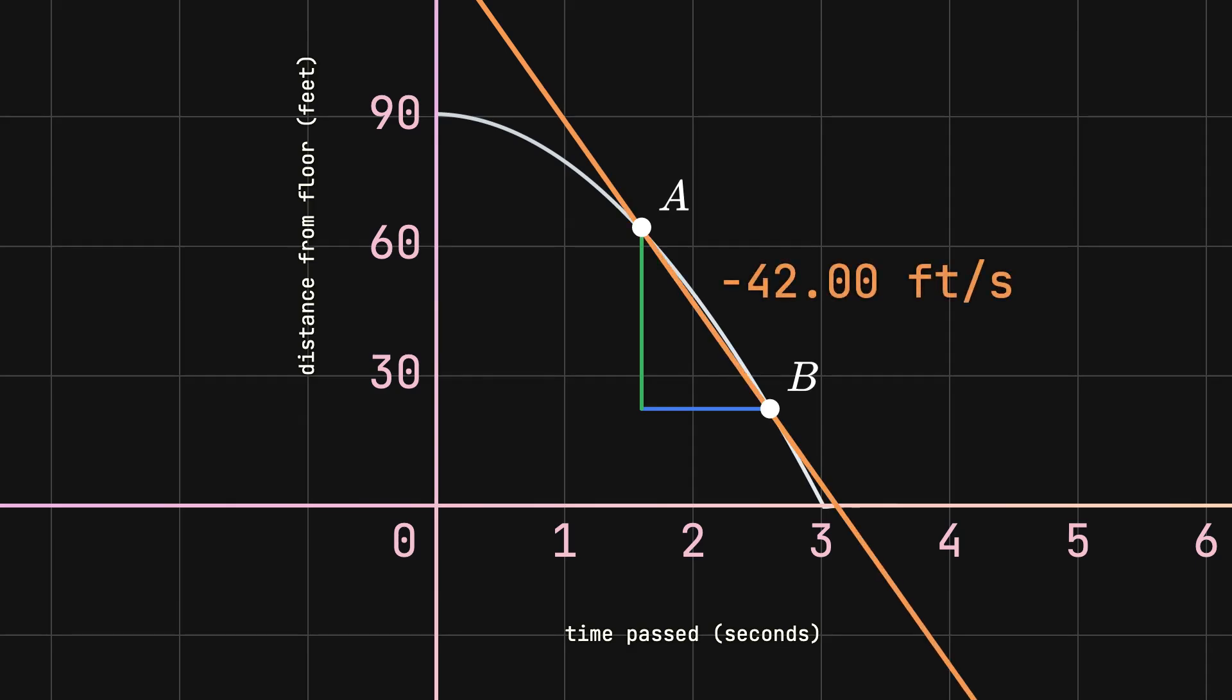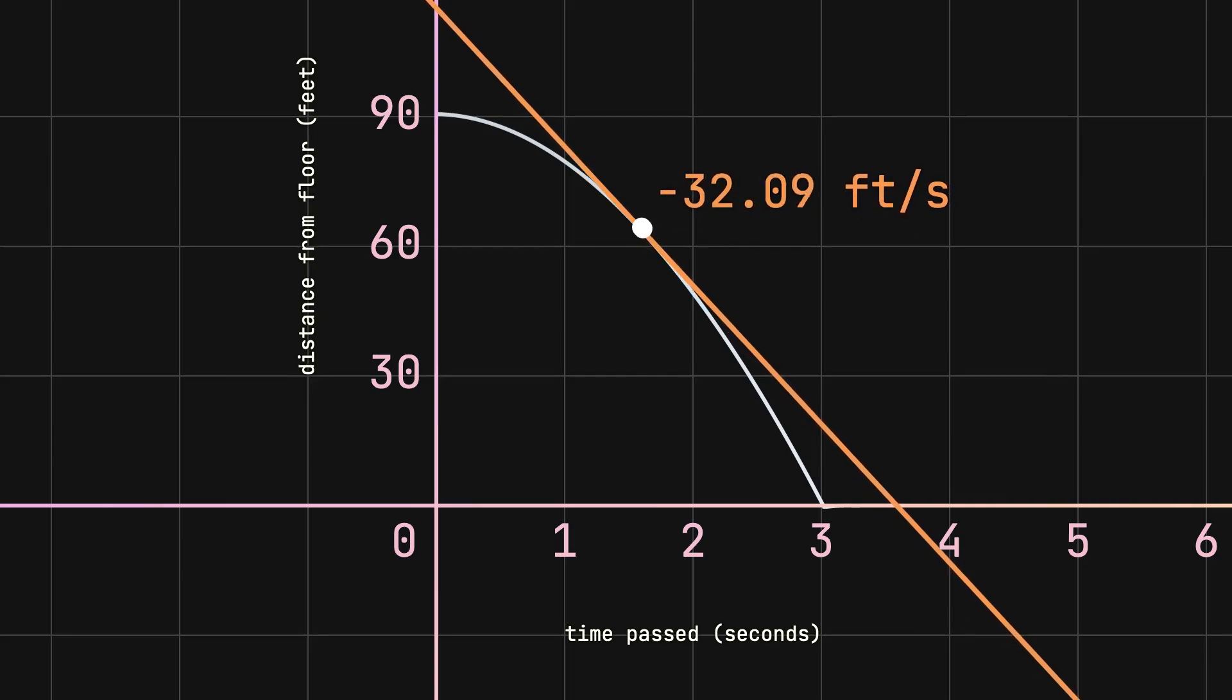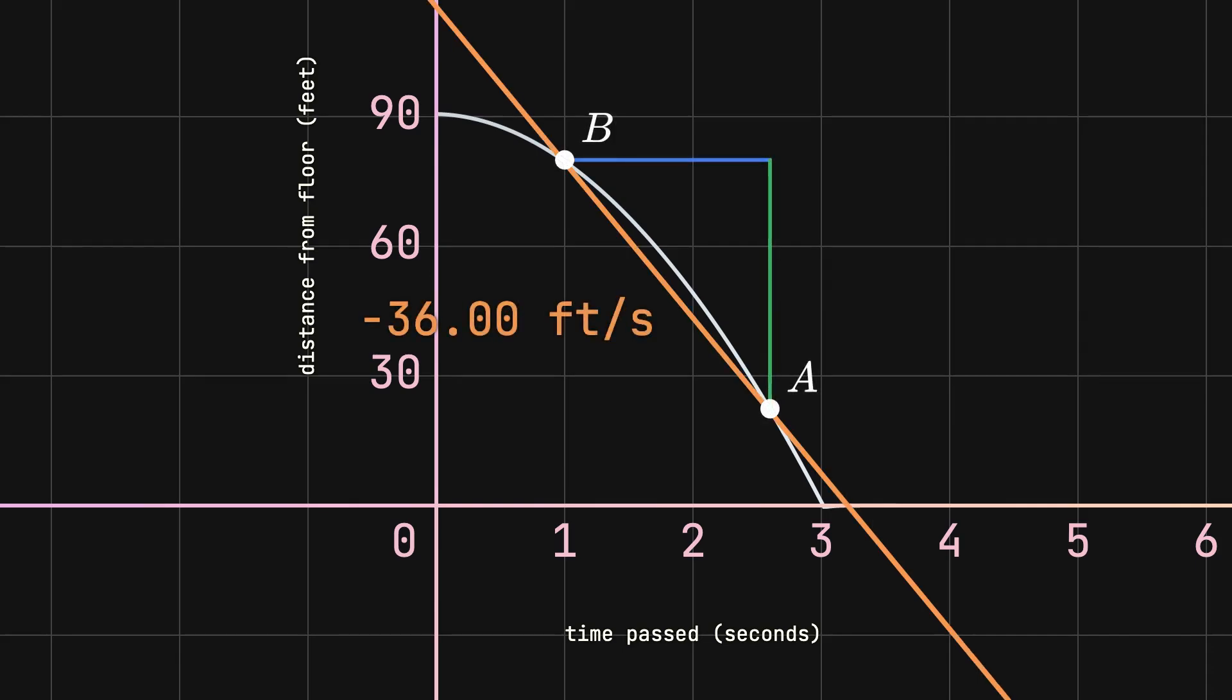At this later time, using the same process, the speed is 32 feet per second. Here, we are putting B before A, but the process still works.